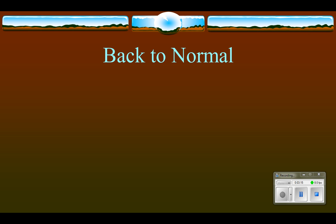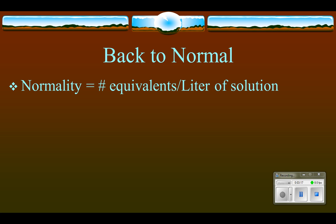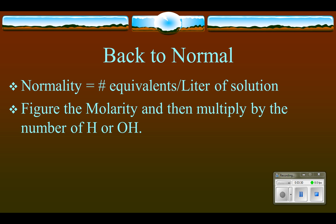Once we have equivalents, there's another unit called normality. It's meant to sound like molarity because it's similar. Molarity is the number of moles of solute per liter of solution. Normality is defined as the number of equivalents of solute per liter of solution. The easiest way to find normality is to calculate the molarity and then multiply it by the number of hydrogens or hydroxides in the formula.